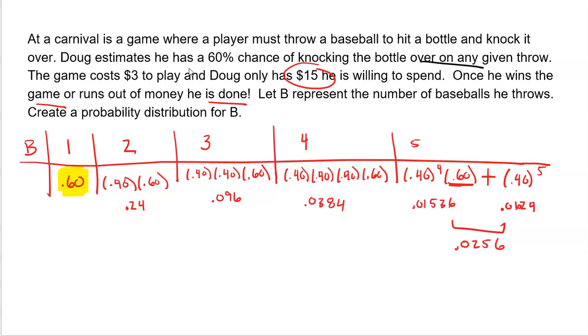Nice thing you could do is add all these together to make sure that they add up to one. Throws a baseball, win, 60% chance, done, out the door. Two baseballs, first one's a miss, second one's a win. Three baseballs, two misses, then a win. Four baseballs, three misses, and then a win. Five baseballs, and here's where we've got to really put on a thinking cap. That could be four misses followed by a win, or all five miss, which means he's out of money, so he's done with the game. So there's two options to throwing five baseballs. And since there's two options, we have to add those two options together to get the final probability for that outcome. Pretty cool. That's a pretty cool problem.